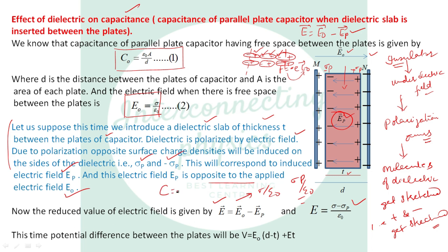To calculate capacitance, we calculate potential difference between the plates. The applied electric field E₀ exists in the free space region of thickness (D minus T), and the reduced electric field E exists inside the dielectric of thickness T. For example, if separation between plates is 3 mm and dielectric thickness is 2 mm, then D minus T is 1 mm of free space. Using E equal to V over D, the total potential difference V is E₀·(D minus T) plus E·T.